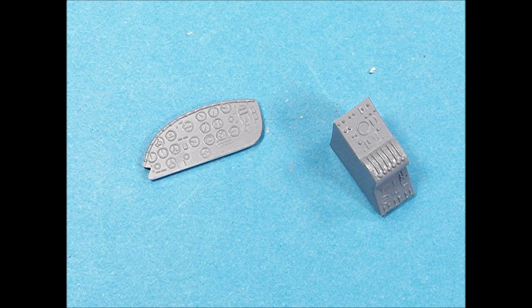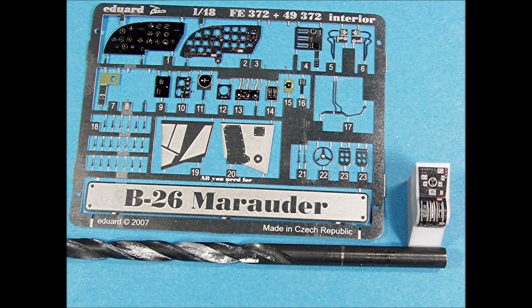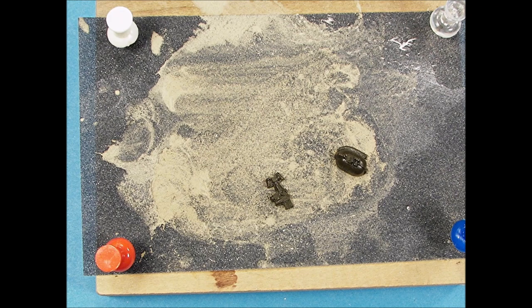The cockpit instrument console and the engine control console had surface detail sanded off so that the Eduard pre-painted placards would sit correctly. To get the engine control console placards to sit correctly, I curved it around the smooth end of a drill bit. I matched the drill bit's diameter to the surface of the plastic part. I wanted to use some of the Monogram kit's interior details, so I cut them out and then sanded the remaining plastic off by running the parts across a stationary piece of sandpaper.